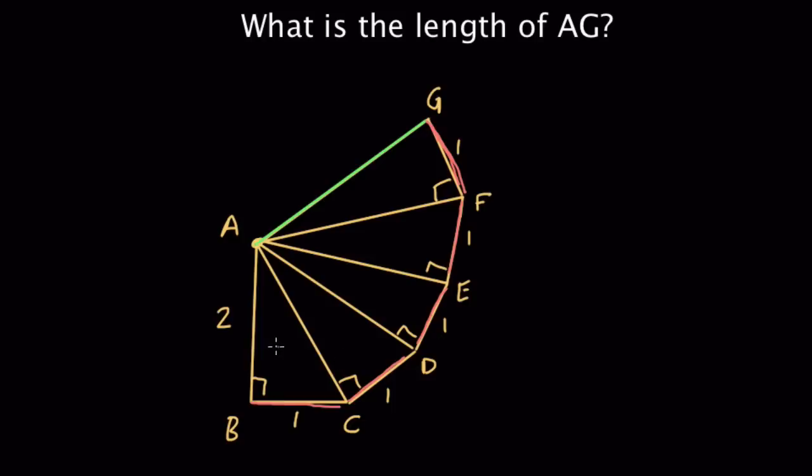With the Pythagorean theorem, let's first solve our first hypotenuse AC, right? So what do we have? We have 1 squared plus 2 squared equals c squared, and that's 1 plus 4 equals c squared. So c equals the square root of 5, right? 1 plus 4 is 5, and that's c squared, so c is the square root of 5. That's our first hypotenuse.